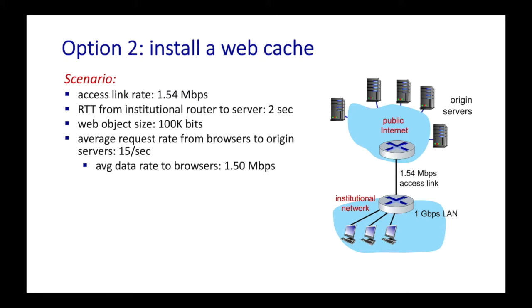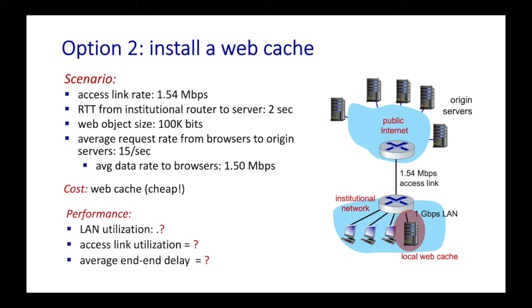Our second option would be to install a web cache. We've already seen by example that having a web cache is a three-for-win: lower page load times for users, decreased load on the access link for the institution, and a decreased load on the origin server. But how do we quantify these benefits?